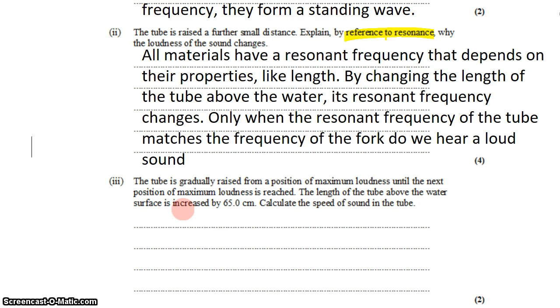Now the tube is gradually raised from a position of maximum loudness until the next position of maximum loudness is reached. The length of the tube above the water's surface is increased by 65 cm in that time. Calculate the speed of sound in the tube.